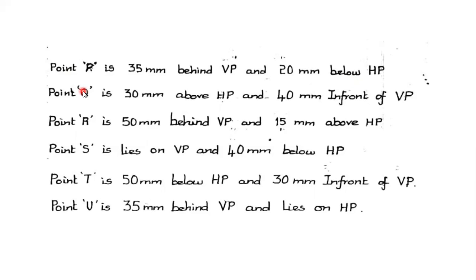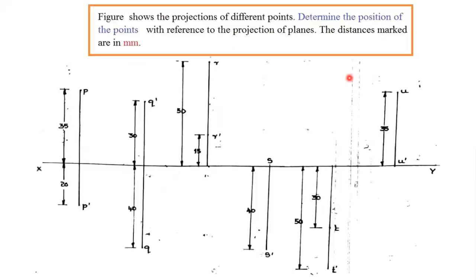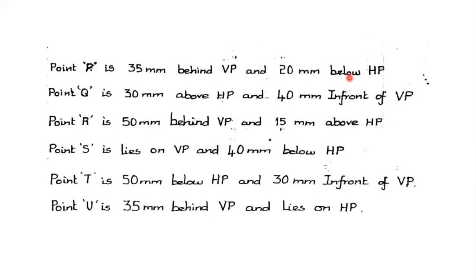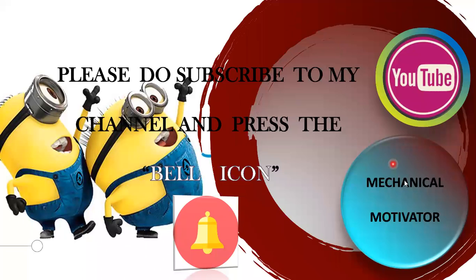You would write something like: 'Point P is 30 mm behind VP and 20 mm below HP.' Previously we saw them give these wordings and we plotted the diagram; sometimes they give the diagram and ask for the wordings. I hope everyone has understood. If you have any doubt, just type in the comment section. Do subscribe to my channel Mechanical Motivator and press the bell icon so you get all the videos I upload. Thanks for watching this video. Have a great day.